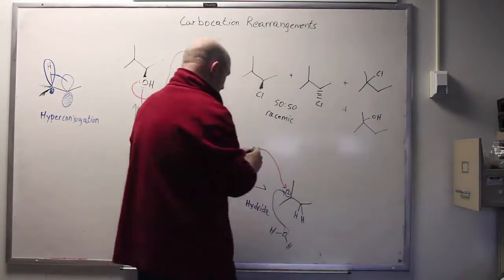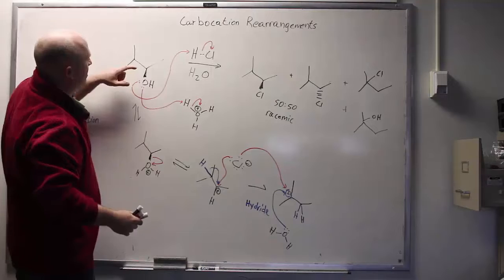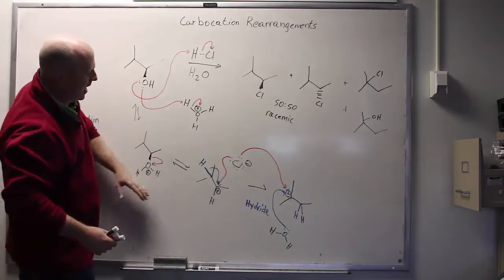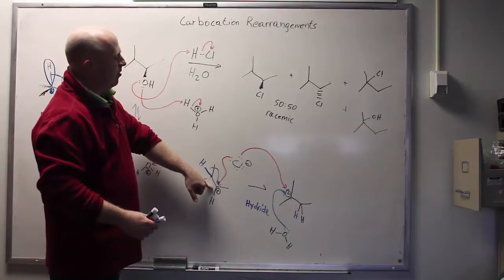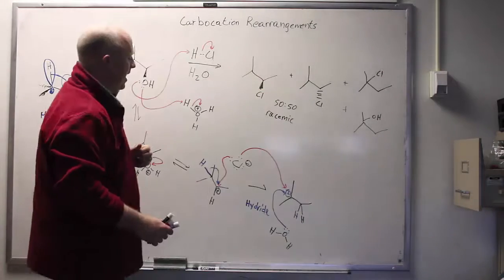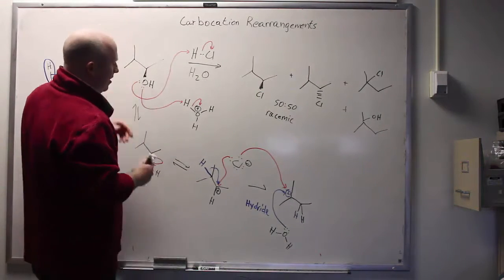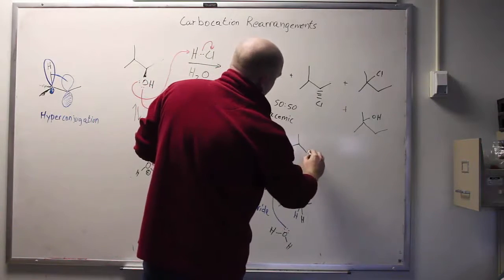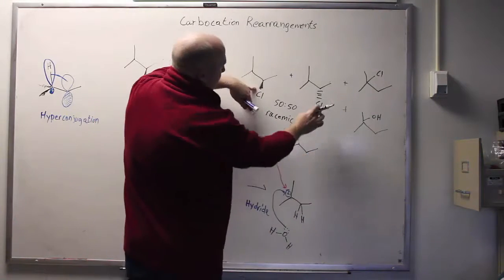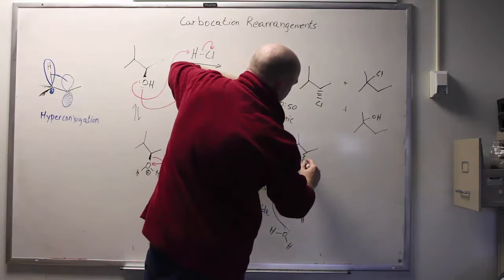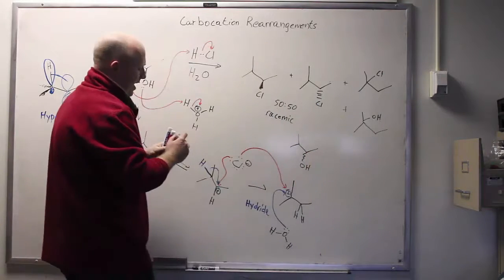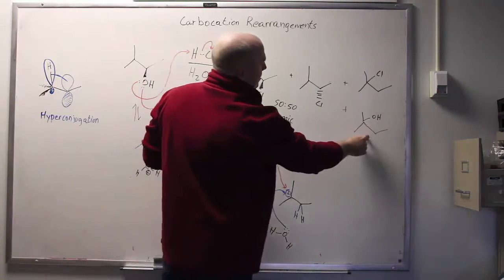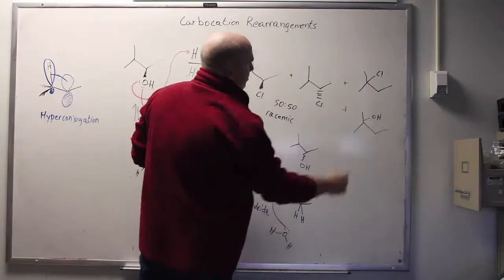So the moral of the story here is that if you take this material and form an actual carbocation, a secondary carbocation, you get all the products you'd expect from adding in the chloride. You would also destroy the stereochemistry but get some water present. That's going to be another product that I have neglected to mention so far. So you get both enantiomers of the chloride, you get both enantiomers of the alcohol, and you get the tertiary alcohol and you get the tertiary chloride.